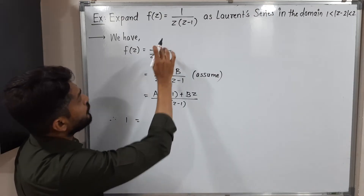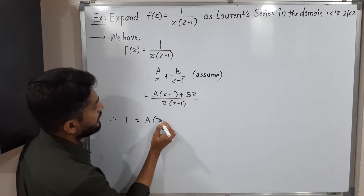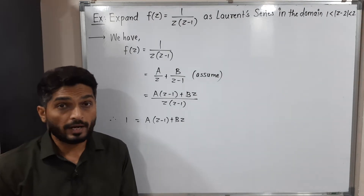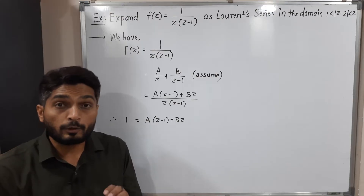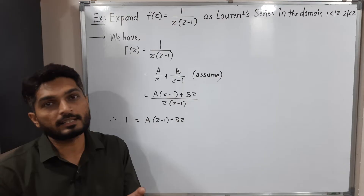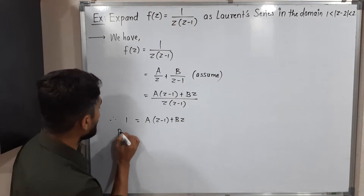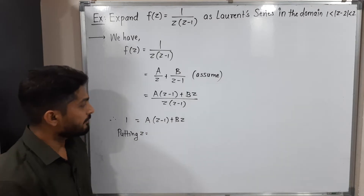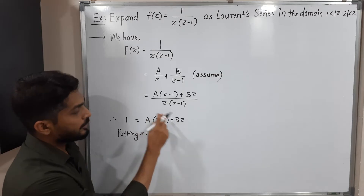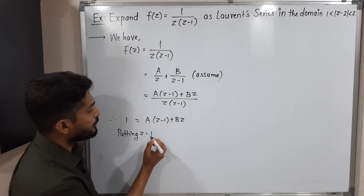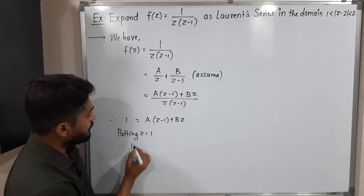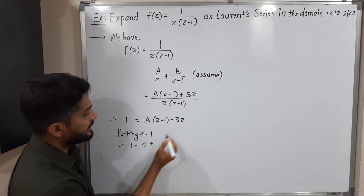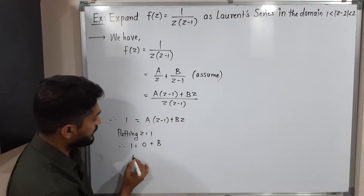So we get: 1 = A(z-1) + Bz. To find B, we substitute z=1. On the left side we have 1; on the right, A(1-1) = 0, so the A term vanishes. We are left with B, giving us the value B = 1.